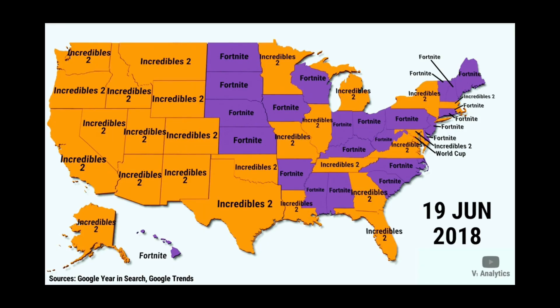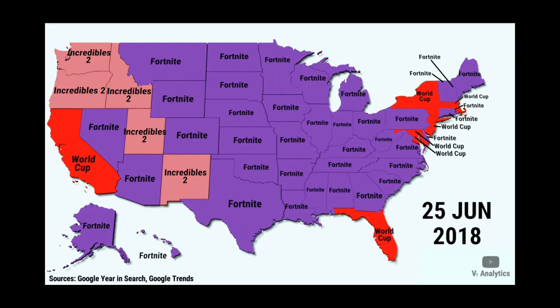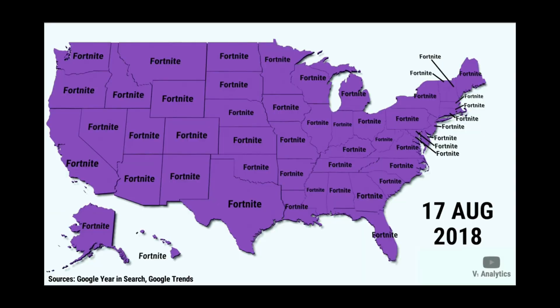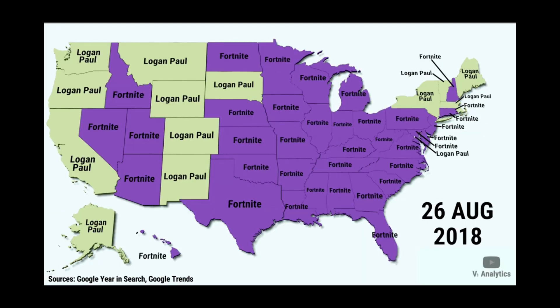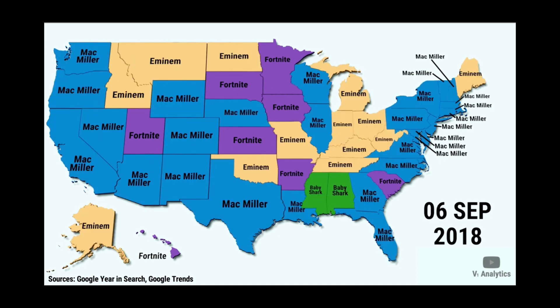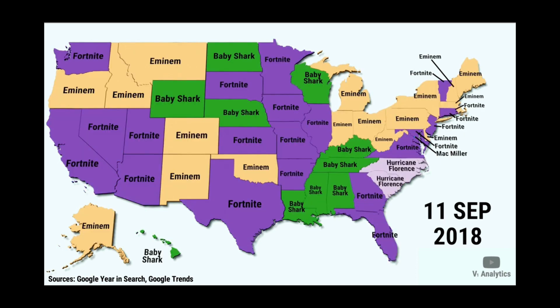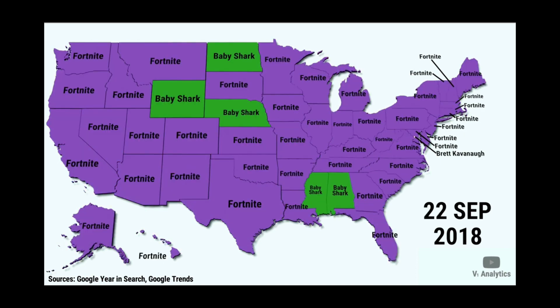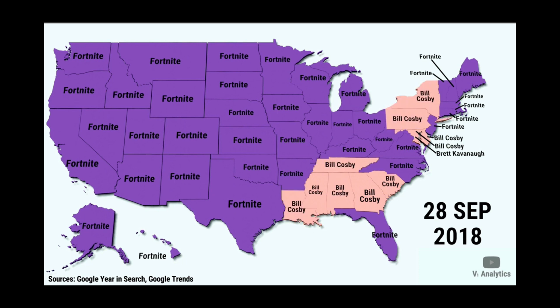So this first data viz uses Google Trends data but looks at it at a US level, divided up by state. Here you can really see the pattern of how it's changing day by day and whether it's taking over the whole country or whether it's really staying in a couple of states.